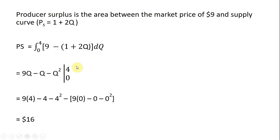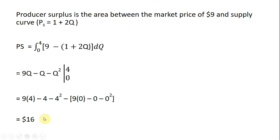Finally, producer surplus is the area between the market price of $9 and the supply curve, again evaluated between 0 and 4, where 4 is the equilibrium quantity. Subtracting the inverse market supply from 9, taking antiderivatives, and evaluating between 4 and 0, producer surplus is $16. I hope you found this video helpful.